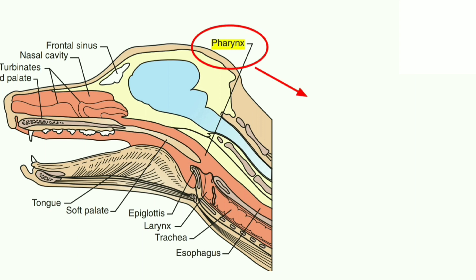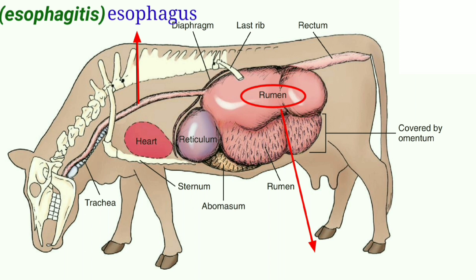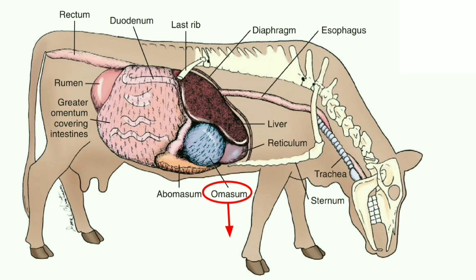Moving outside the oral cavity, there is the pharynx. Inflammation of the pharynx is known as pharyngitis. Inflammation of the esophagus is known as esophagitis. Inflammation of the rumen is known as rumenitis. Inflammation of the reticulum is known as reticulitis. Inflammation of the omasum is known as omasitis.